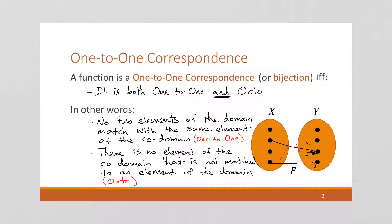So what does that mean? Well, it means that each element in the domain points to a unique element in the codomain and that every element in the codomain has a matching partner. Well, what does that say about the size of our two sets, X and Y?